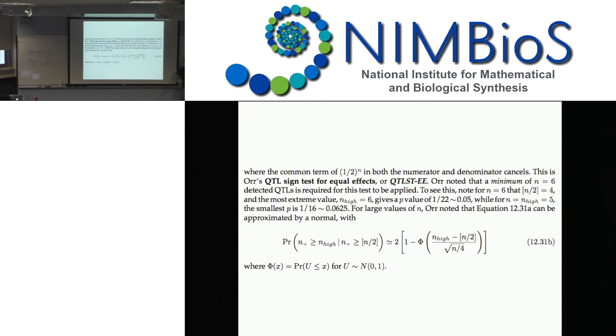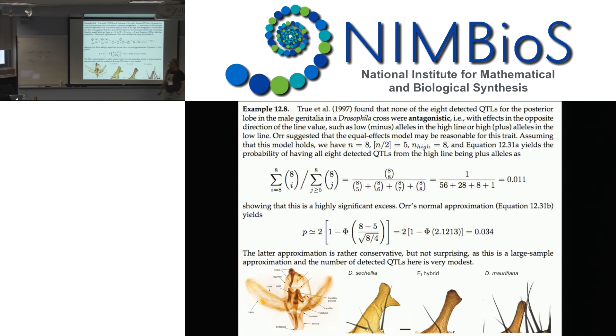With six detected QTLs, the floor of N/2 is four, so the high line must have at least four. The most extreme would have six, giving about a 5% probability. Your sample size N of QTLs has to be at least six. People often lump traits together to get this magic number of six.